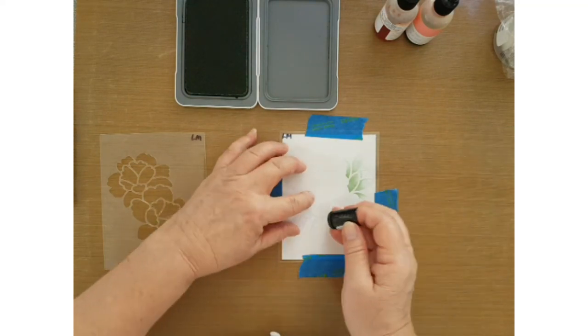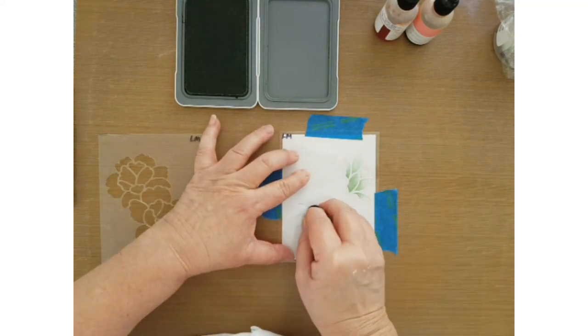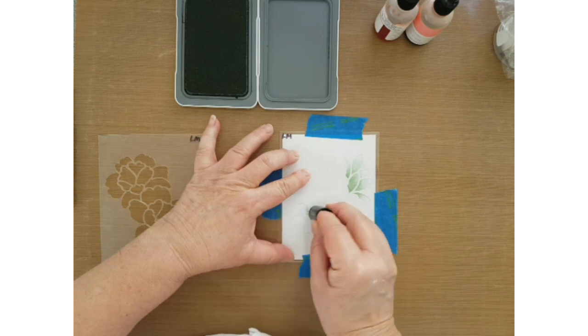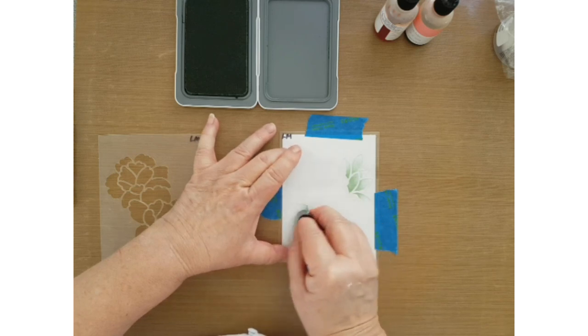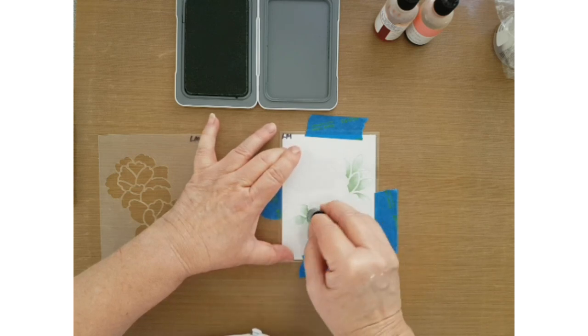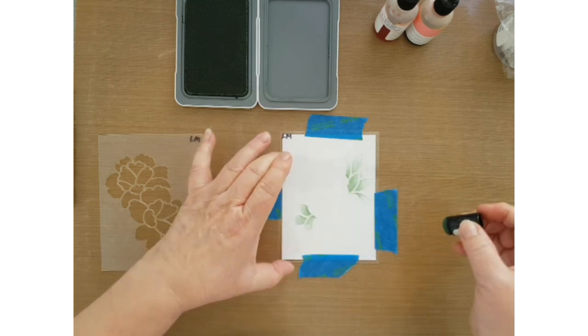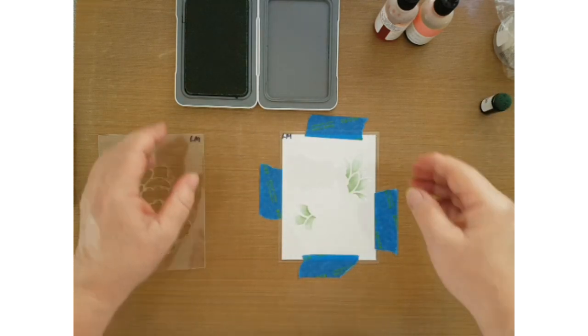I'm just dabbing off to the side on my all-purpose mat so that I don't have too much ink on my dauber. Okay, I think that's about the way I want it.